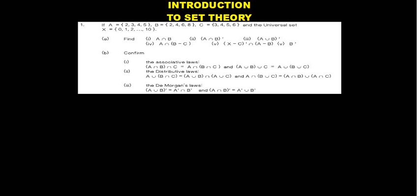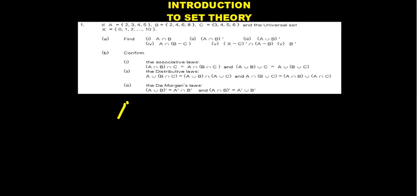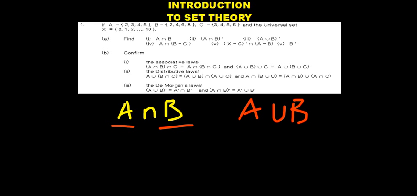In this video we're going to have an introduction to set theory by looking at some of the questions that can be asked on sets. Before I solve the questions, I'd like to give you an introduction or reminder about what you already know. Whenever you see A intersection B, it means you're trying to find the elements found in both set A and set B. When they say A union B, they want you to combine all the elements in both A and B. For intersection we use AND, and for union we use OR.